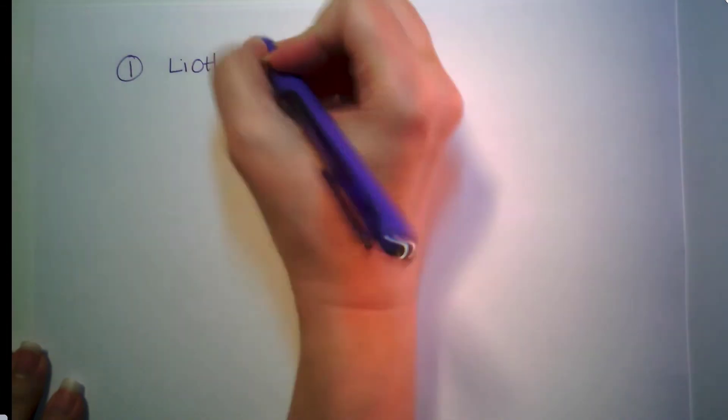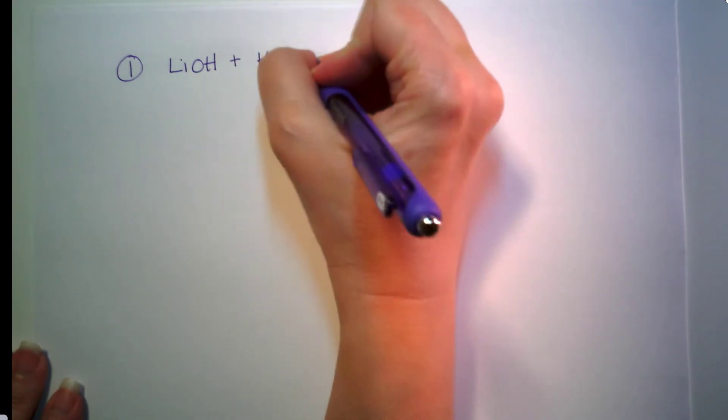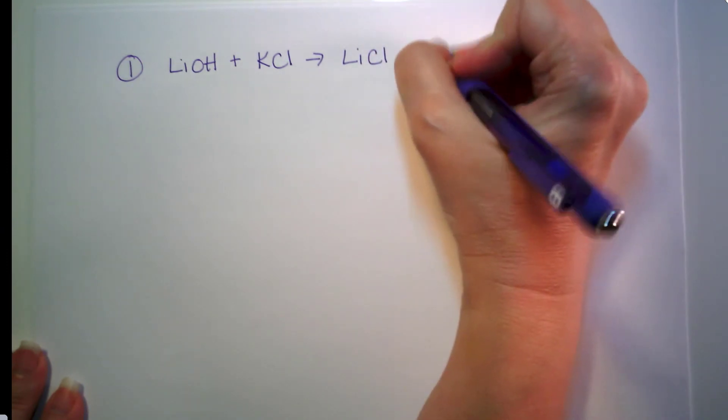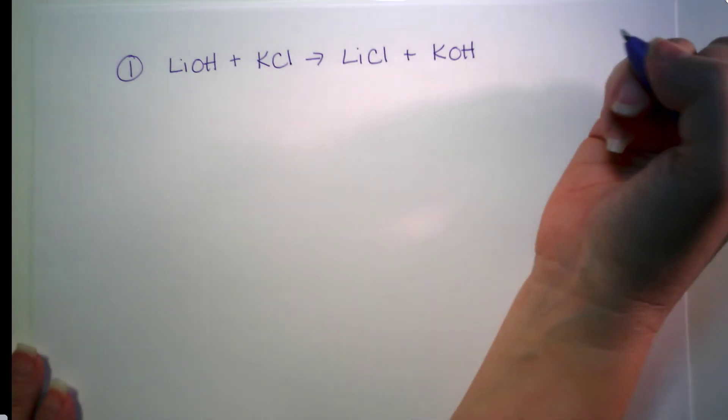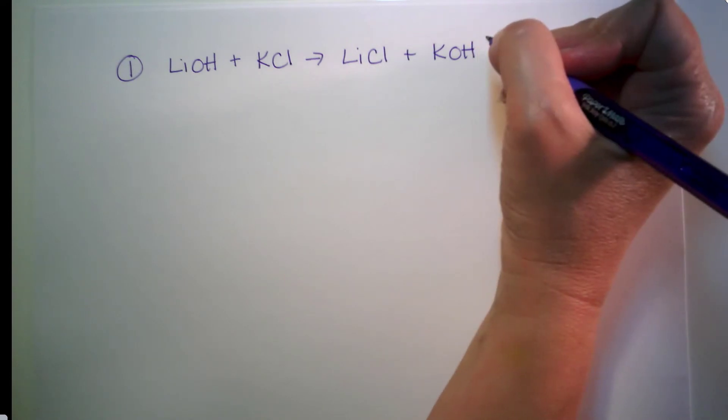Let's look at problem number one. Write down our balanced chemical equation. So we're on problem number one. And its equation is lithium hydroxide plus potassium chloride yields lithium chloride and potassium hydroxide. If you look this over, you should notice that it is completely balanced already.